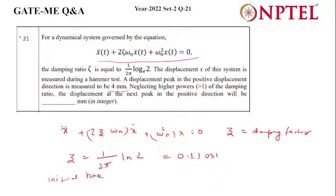Here ζ is less than 1, so we can call this as an underdamped system.